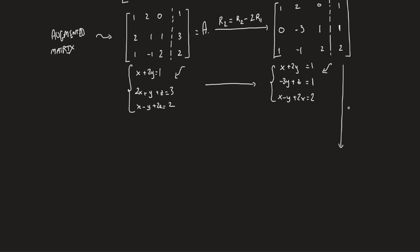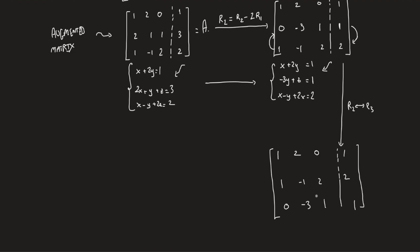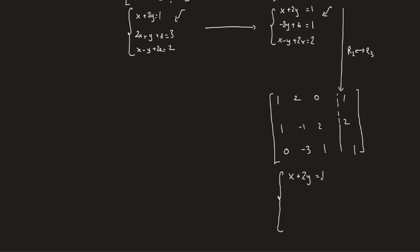Now let's do another operation: exchange row two with row three. Row one remains the same — 1, 2, 0, and 1. Row two becomes the old row three: 1, minus 1, 2, and 2. Row three becomes the old row two: 0, minus 3, 1, and 1. What we did is just exchange row two with row three, so the second equation in the new system is the old third equation, and vice versa. Of course, exchanging the places of two equations does not change the solution.